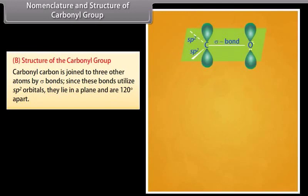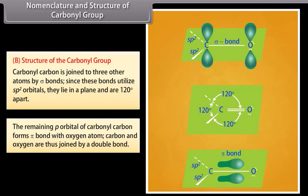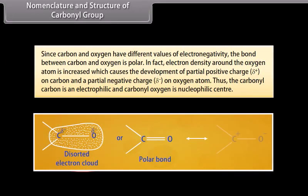Structure of the carbonyl group. The carbonyl carbon is joined to three other atoms by sigma bonds. Since these bonds utilize sp2 orbitals, they lie in a plane and are 120 degrees apart. The remaining p orbital of the carbonyl carbon forms a pi bond with the oxygen atom, so carbon and oxygen are joined by a double bond. Since carbon and oxygen have different electronegativities, the bond is polar — electron density around oxygen is increased, causing a partial positive charge on carbon and a partial negative charge on oxygen. Thus, the carbonyl carbon is an electrophilic center and carbonyl oxygen is a nucleophilic center.